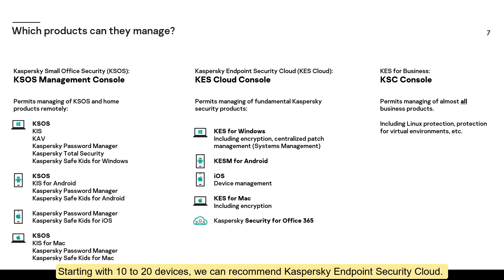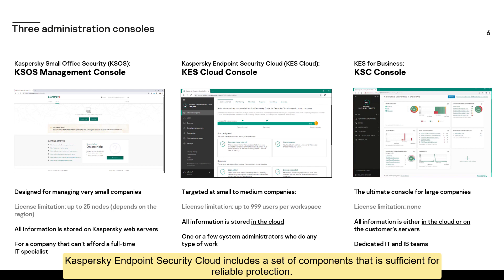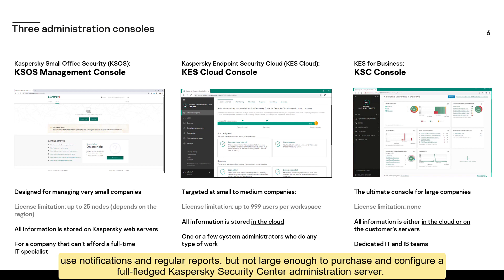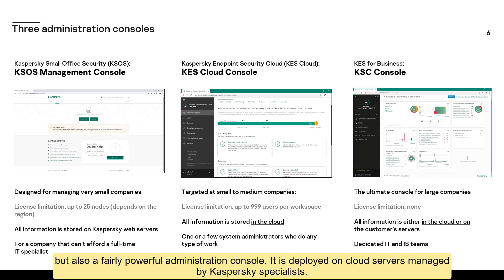Starting with 10 to 20 devices, we recommend Kaspersky Endpoint Security Cloud. It provides full-fledged protection for workstations, servers, mobile devices, and Office 365, with a set of components sufficient for reliable protection. It is designed for companies large enough to create configuration profiles for device groups, use notifications and regular reports, but not large enough to purchase and configure a full-fledged Kaspersky Security Center Administration Server. It provides not only an account on a Kaspersky web server, but also a fairly powerful administration console deployed on cloud servers managed by Kaspersky specialists.